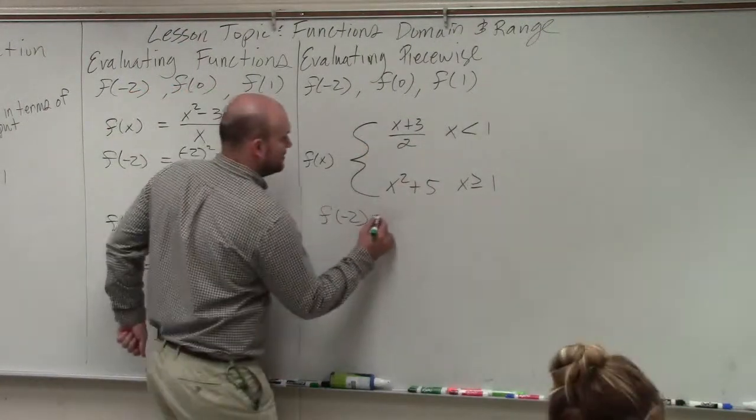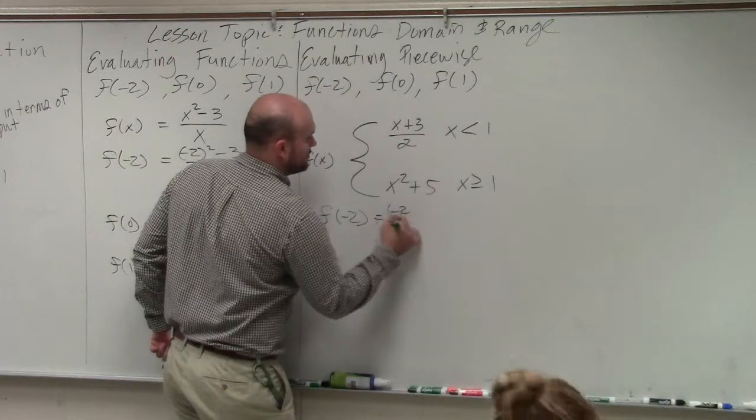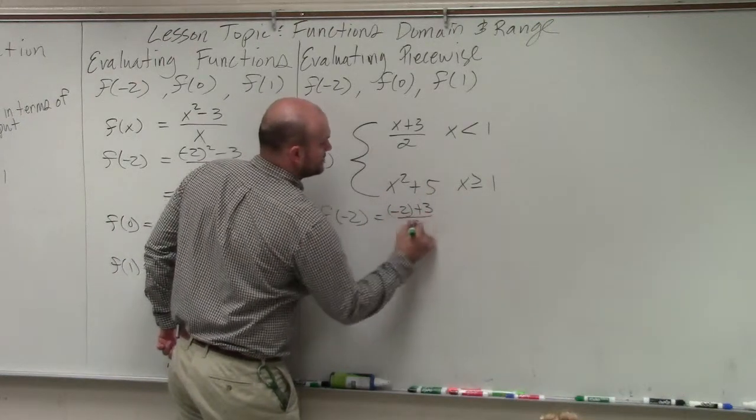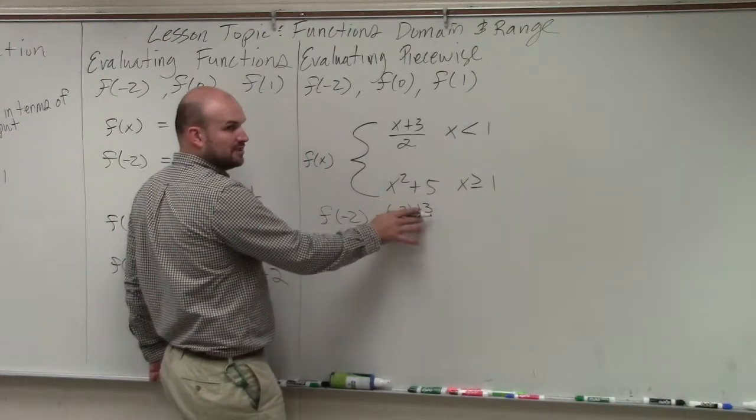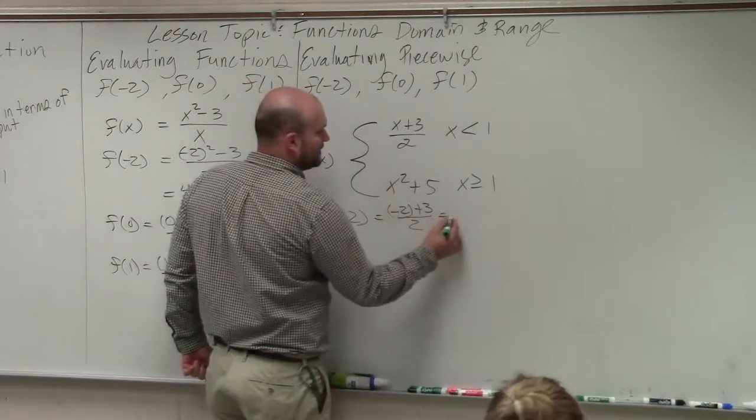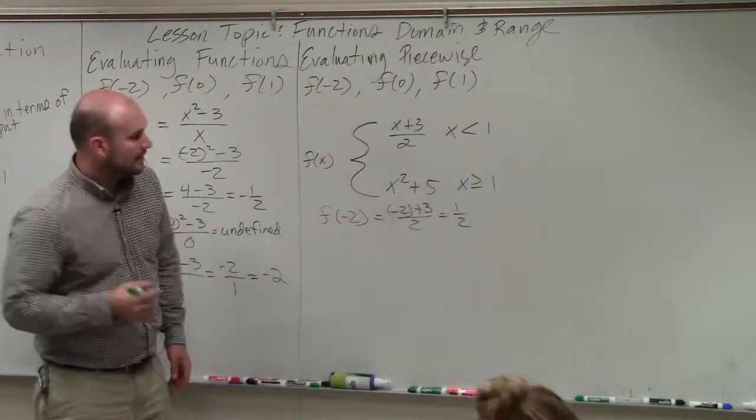So therefore, I plug in negative 2 plus 3 divided by 2. Well, negative 2 plus 3 is 1. 1 divided by 2 is 1 half.